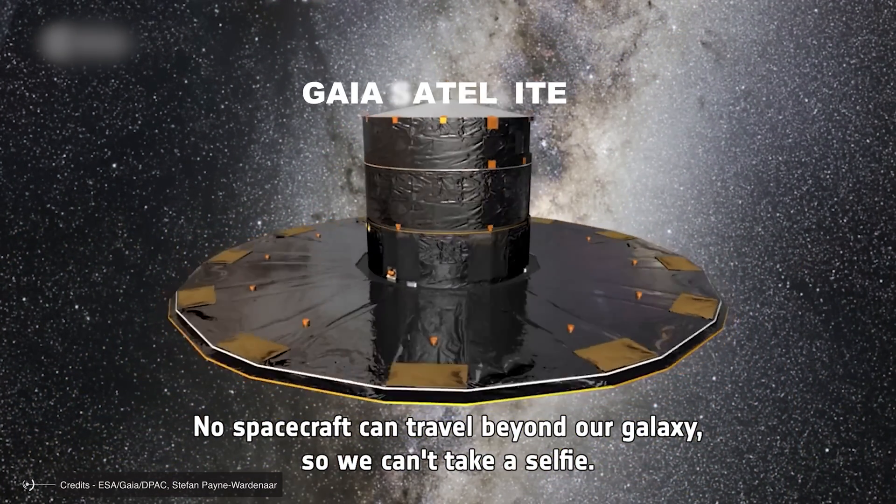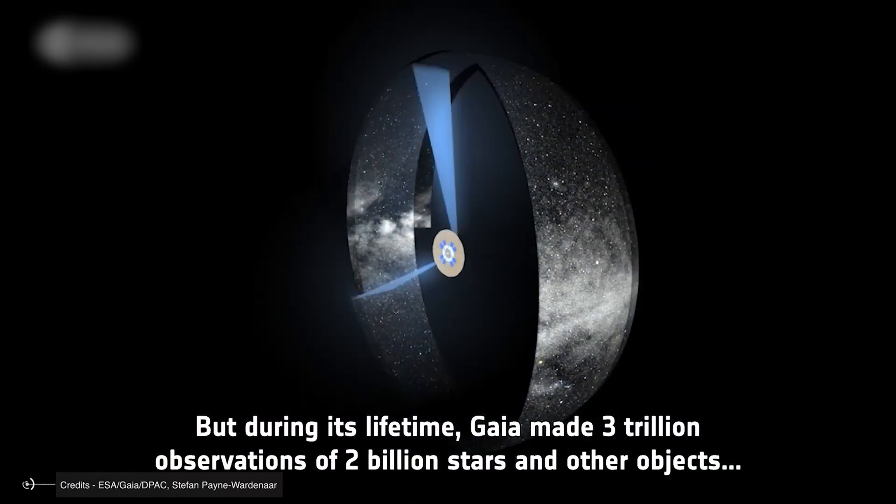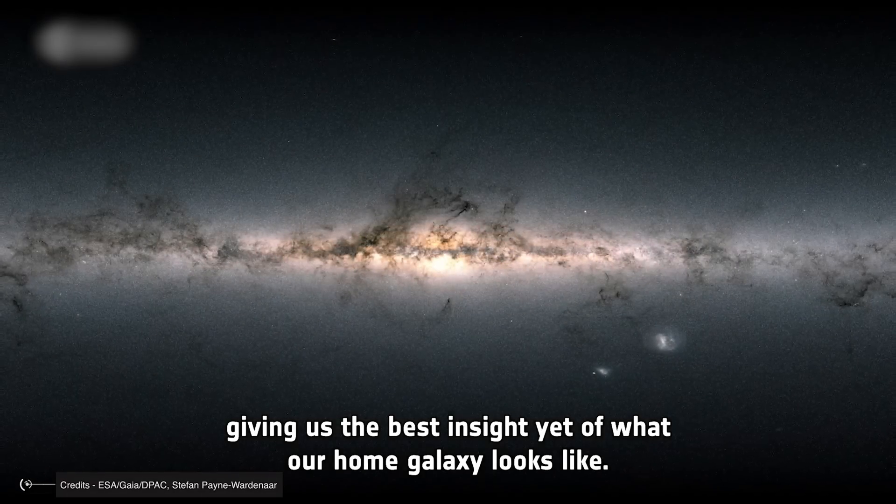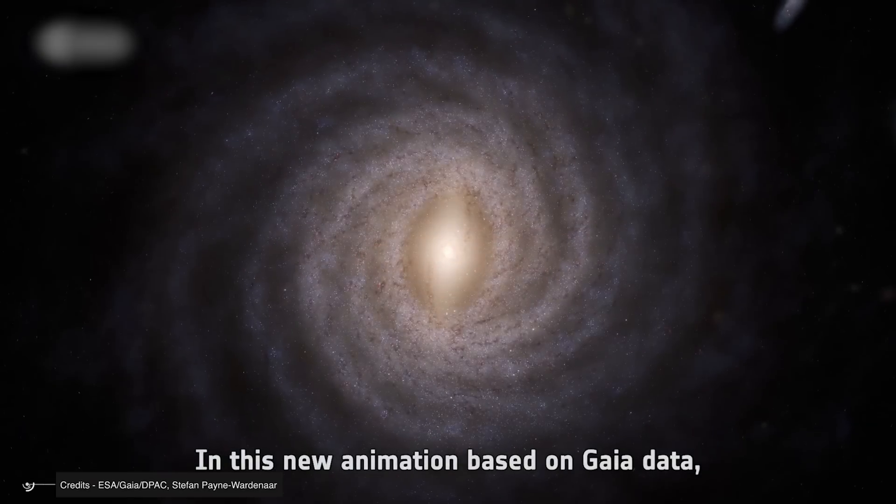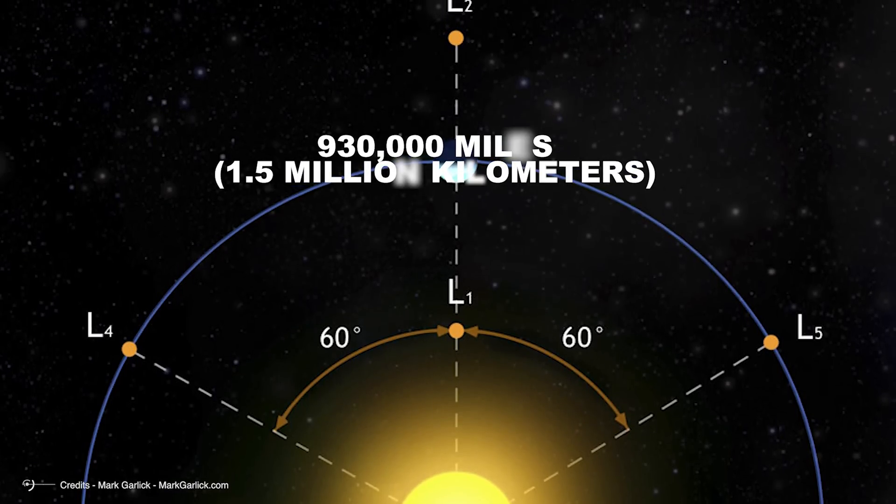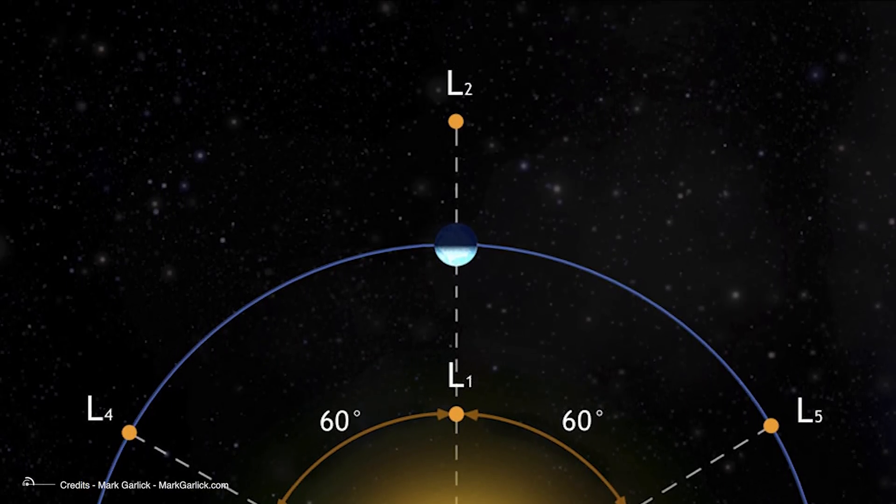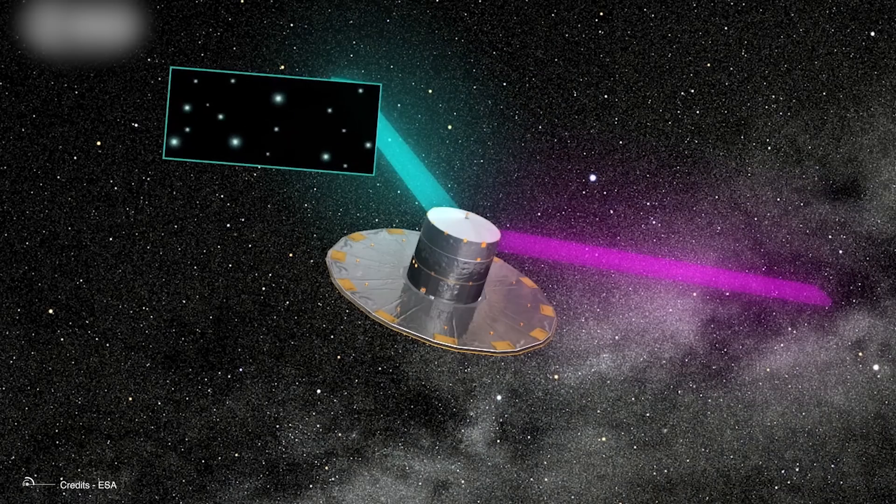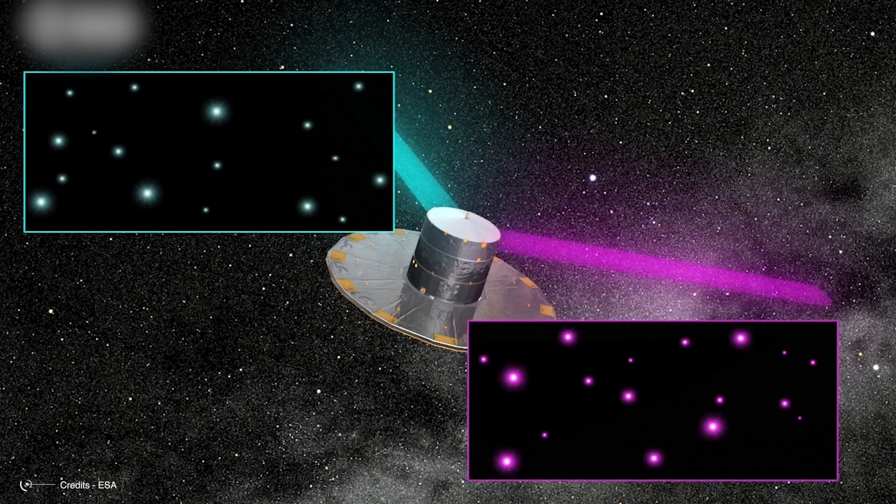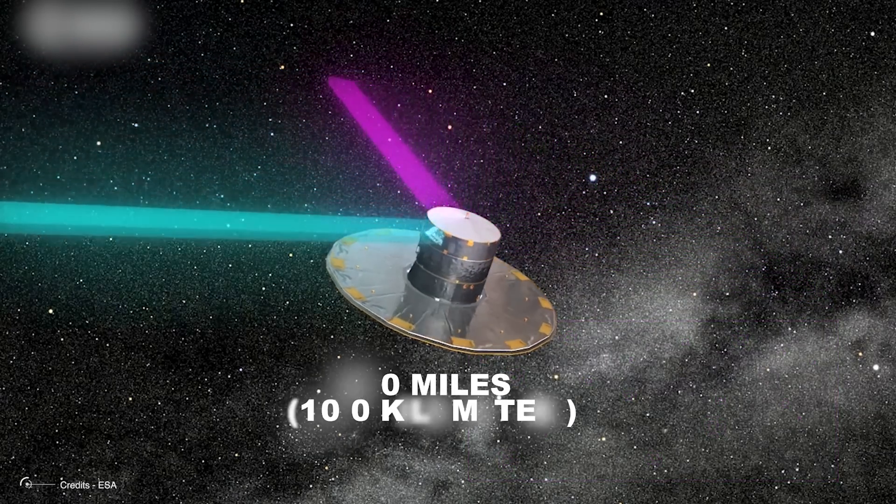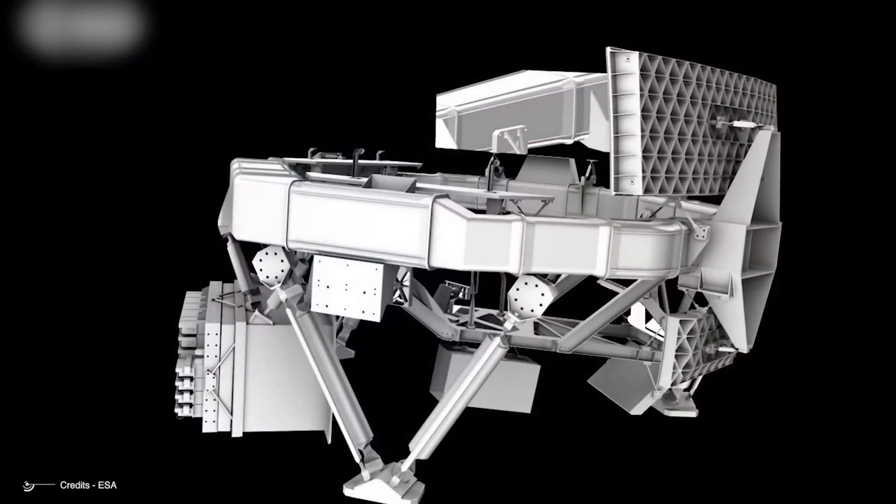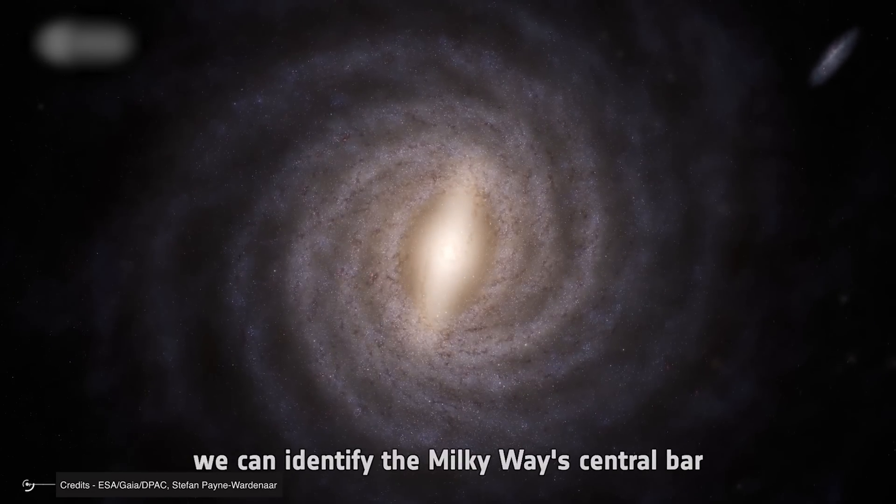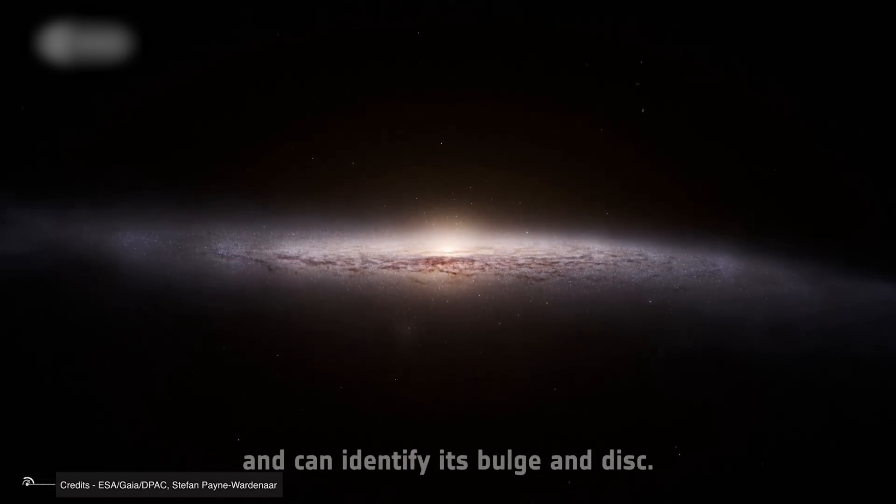It's thanks to the revolutionary Gaia satellite of the European Space Agency that today we can predict these stellar encounters with unprecedented precision in the history of astronomy. Launched on December 19, 2013 from the Kourou Cosmodrome in French Guiana, Gaia has transformed our understanding of the galactic neighborhood. Positioned at the Lagrange Point L2, 930,000 miles or 1.5 million kilometers from Earth, this extraordinary space observatory has mapped the positions, distances and movements of nearly 2 billion stars with astrometric precision reaching 24 micro arc seconds for the brightest stars, equivalent to measuring the diameter of a human hair at a distance of 620 miles or 1,000 kilometers. Gaia's data allows us to reconstruct stellar trajectories in the past and future as never before.